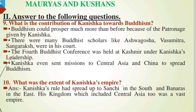Ninth question: What is the contribution of Kanishka towards Buddhism? Buddhism could prosper much more than before because of the patronage given by Kanishka. There were many Buddhist scholars like Ashvaghosha, Vasumitra, and Sangha Raksha in his court. The fourth Buddhist conference was held at Kashmir under Kanishka's leadership. Kanishka even sent missions to Central Asia and China to spread Buddhism. Tenth question: What was the extent of Kanishka's empire? Kanishka's rule had spread up to Sanchi in the south and Banaras in the east, and his kingdom included Central Asia too — it was a vast empire.